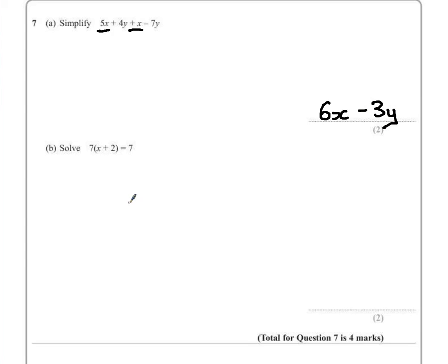Part B. Solve 7, open bracket, x plus 2, close bracket, equals 7. Two steps to solving this one.